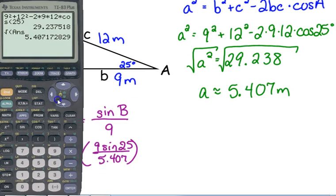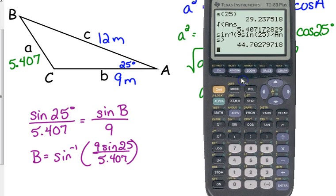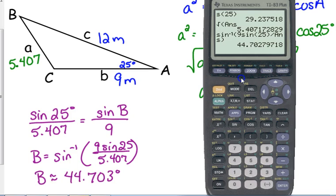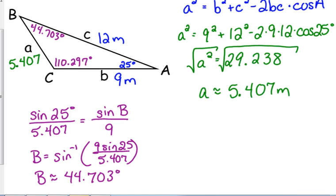So B is equal to the inverse sine of 9 sine of 25 degrees over 5.407. If at all possible, hopefully you've kept the 5.407 there so that you can just use the answer. Remember, it's better to not round if at all possible. So a lot of times it's not going to make a huge difference, but I think it's a good habit to be in. So angle B is approximately 44.703 degrees. And then all we have to do is subtract from 180 to find angle C. 110.297 degrees. And of course, it is a good idea just to do that last check. Make sure smallest angle's across from the smallest side, biggest angle's across from the biggest side, middle angle to the other side. And we are good.